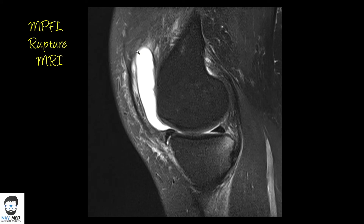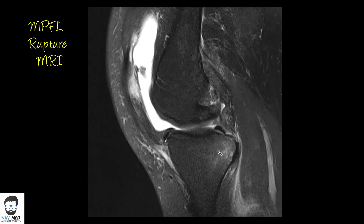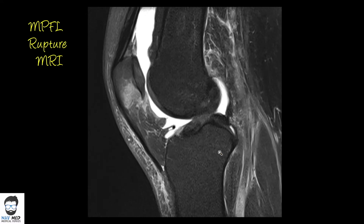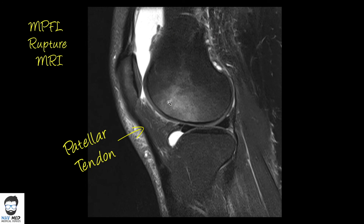Again you can see a lot of effusion — this is all fluid in there. You can see a little bit of bony edema on the back part of the tibia. As you scroll down further you can see the patella coming into view, and you can see a lot of edema in the patella as well. These are your ligaments — the quadriceps tendon and the patellar tendon.